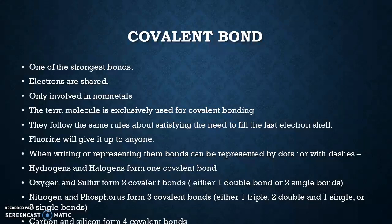Fluorine will give up its electrons to anyone, so it'll bond with pretty much anything. Hydrogens and halogens form one covalent bond because they have one valent electron. Oxygen and sulfur will form two covalent bonds — either one double bond or two single bonds. Nitrogen and phosphorus form three covalent bonds — either one triple bond, one double and one single, or three single bonds. Carbon and silicon will form four covalent bonds because they have four valent electrons available.